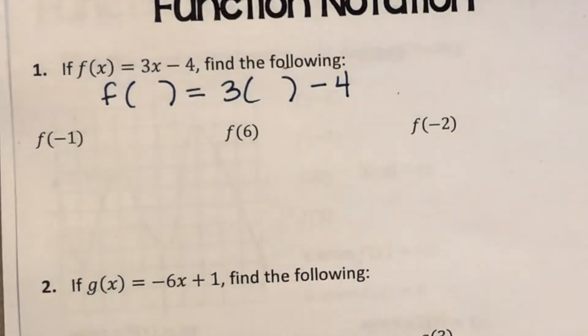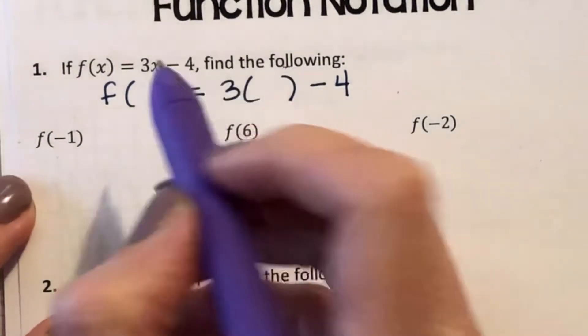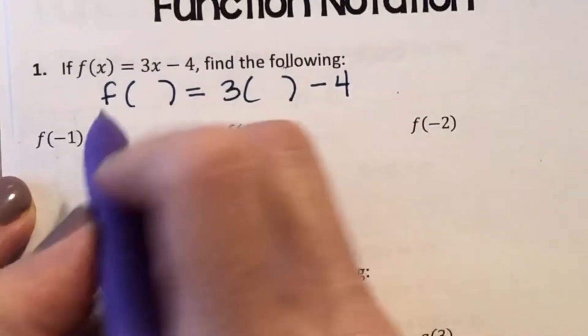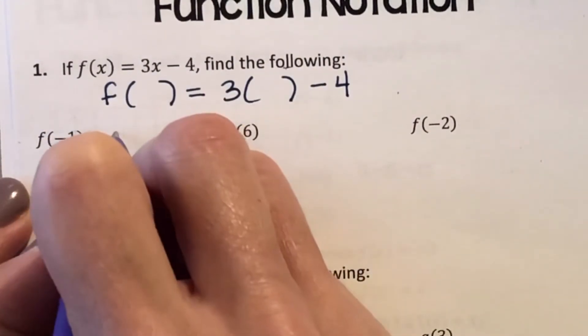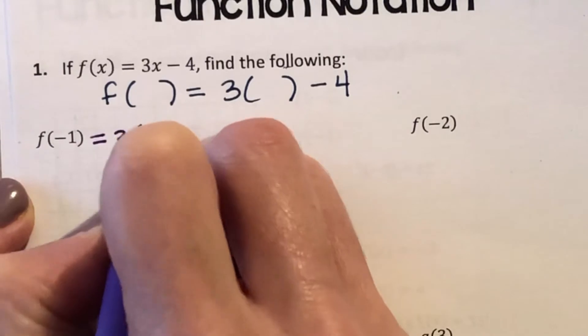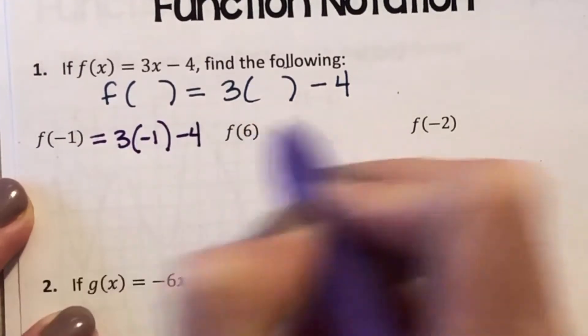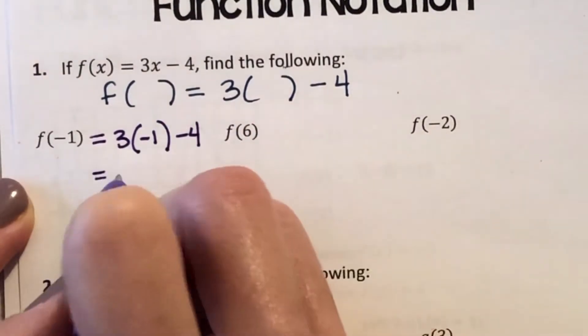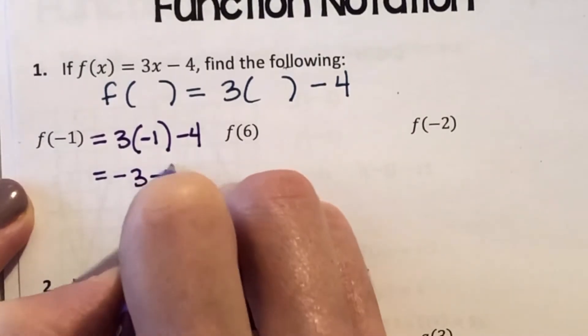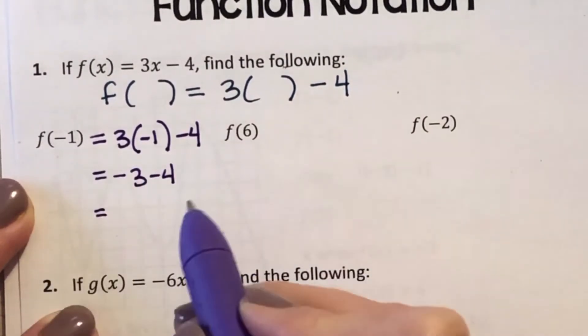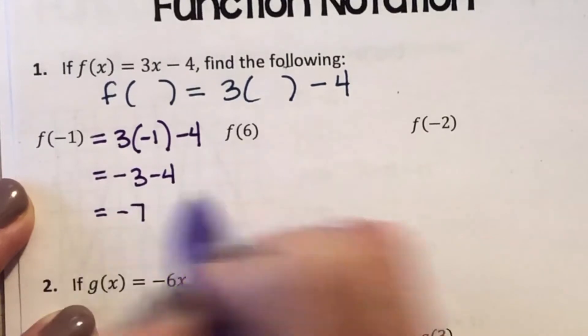If I have f of negative 1, I'm going to replace x with negative 1. So that's going to equal 3 times negative 1 minus 4. 3 times negative 1 is negative 3 minus 4. A negative 3 and a negative 4 is negative 7.